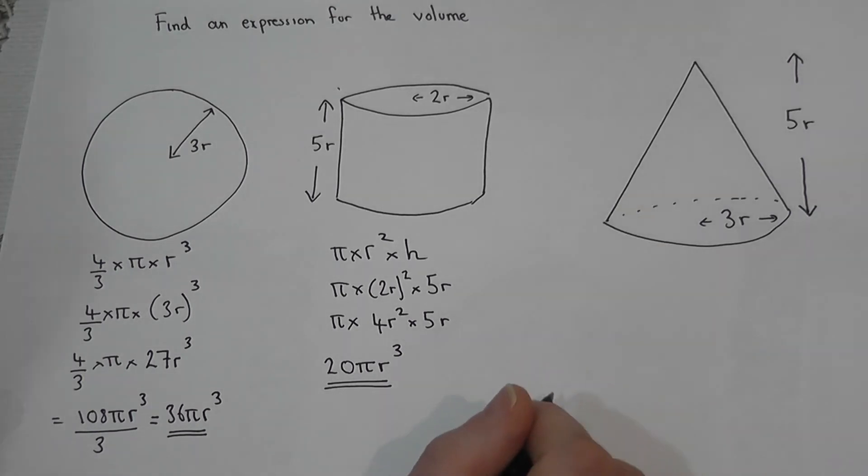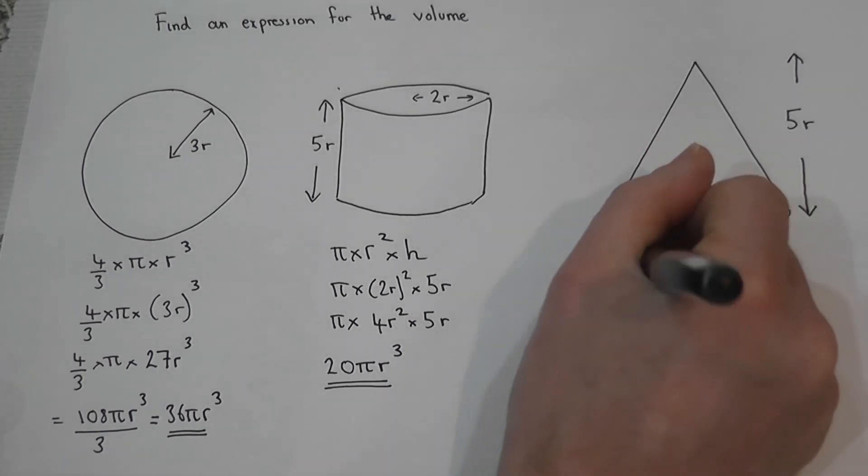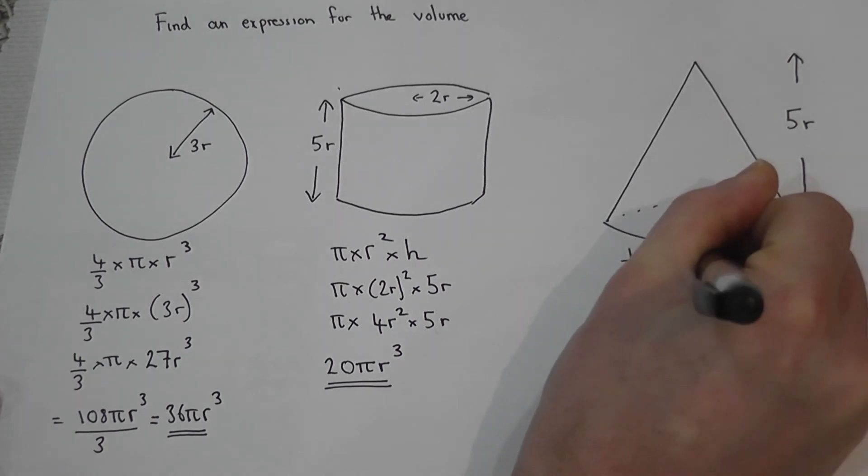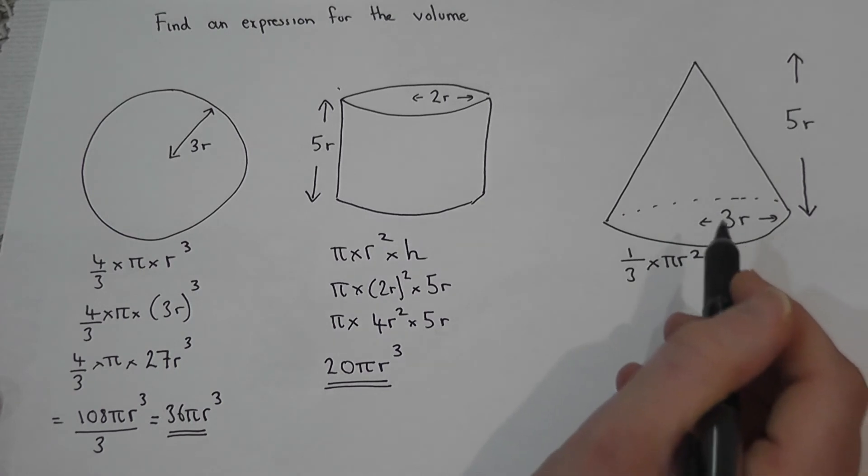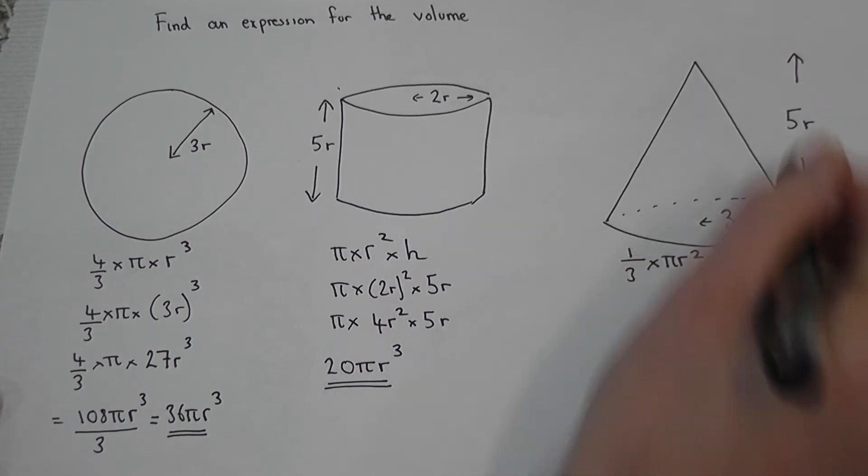The last one is a cone. Now a cone volume is given by a third times by pi r squared. That's basically a third of the area of the base, which is a circle, times by the height.